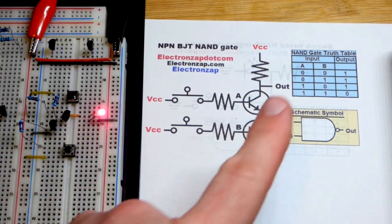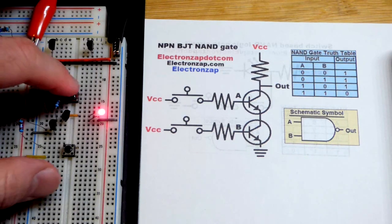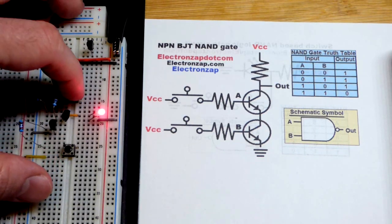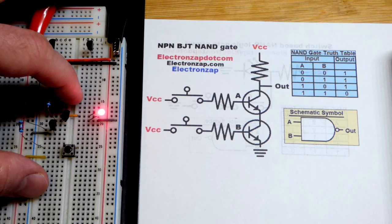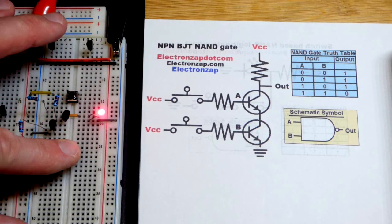So right now, both inputs are low, or off. Since it's switches here, off works better, even though it's transistors. But there we go. We got one. And now we got the other.